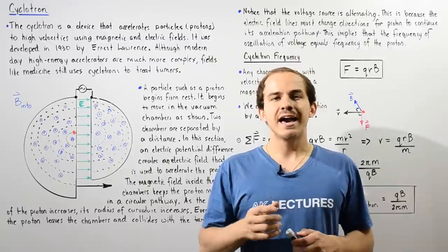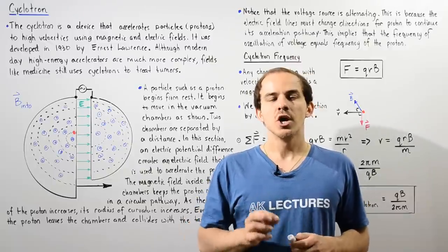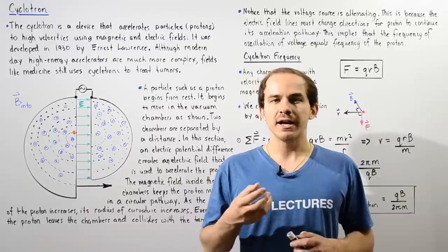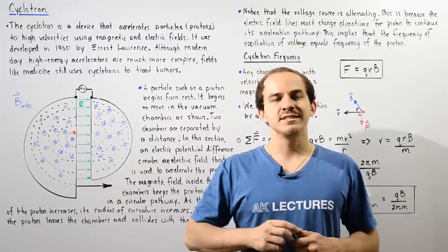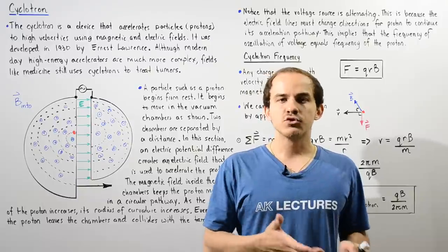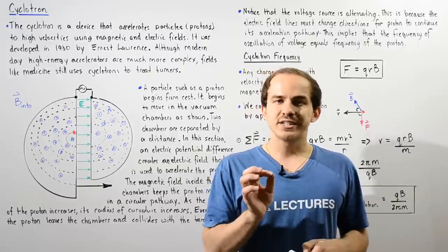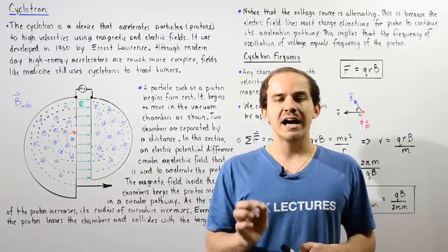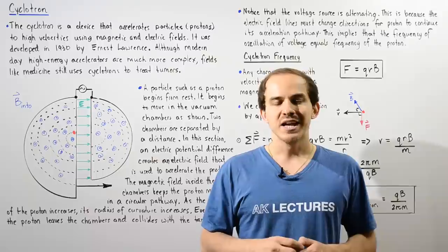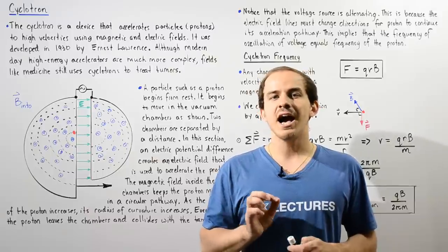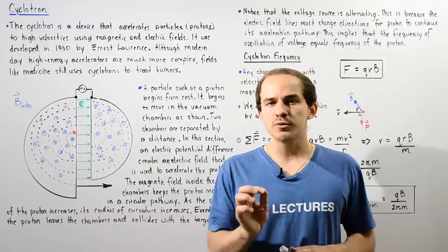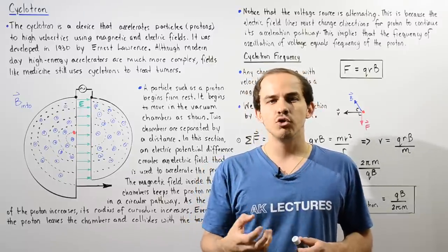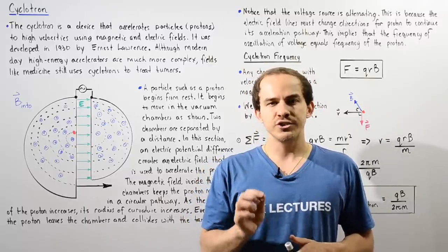One of the earliest high energy particle accelerators was the cyclotron. The cyclotron was developed by Ernest Lawrence in 1930 and it basically uses electric and magnetic fields to accelerate particles, usually protons, to very high velocities and very high energies. Although modern day high energy particle accelerators are much more complicated than the cyclotron, the cyclotron is still used in medicine to treat tumors.